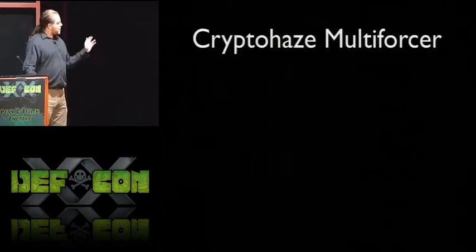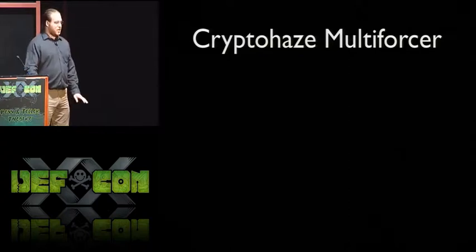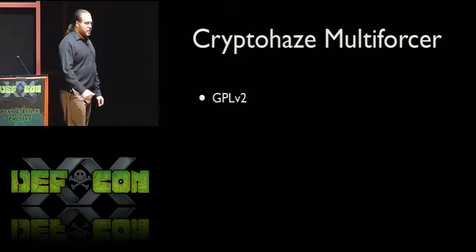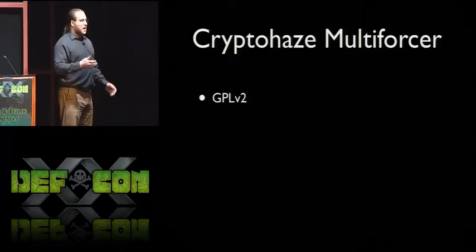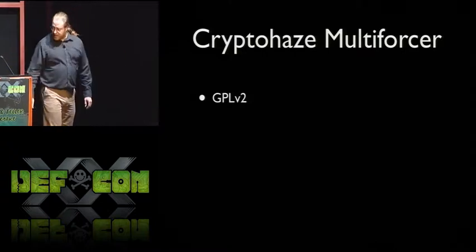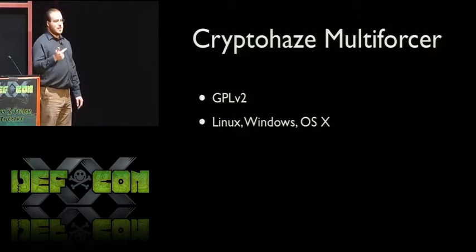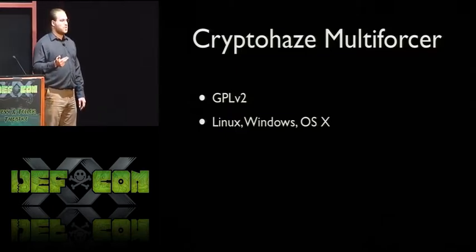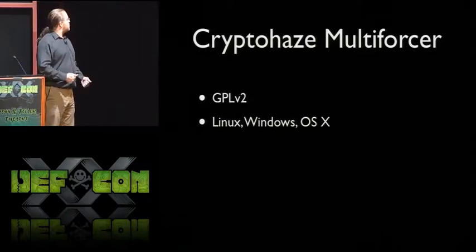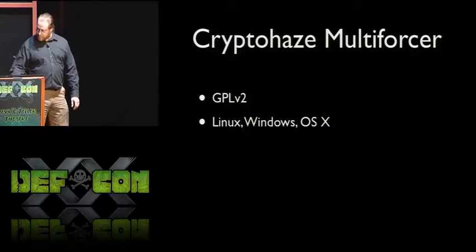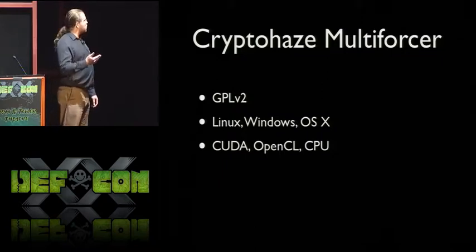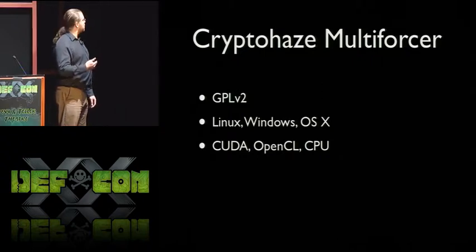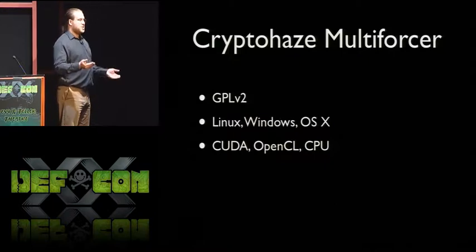So, the tools that I've written — the first one I'd like to talk about is the CryptoHaze Multiforcer. It brute forces multiple hashes. It is a GPLv2-based tool, so it is entirely open source, compatible with a variety of other tool licensing. It is designed to run on Windows, Linux, and OS X. Some other popular tools only support one or two of those platforms. I support CUDA, OpenCL, and the CPU, depending on what devices you're targeting. In some cases, CUDA works better on NVIDIA cards than OpenCL; in some cases, OpenCL works better on a CPU than SSE2 code.